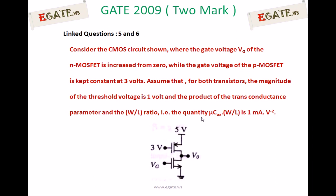For the given CMOS circuit, it consists of a PMOS transistor on top and an NMOS transistor below. The NMOS transistor is given some input voltage VG (gate voltage of NMOS), whereas the gate voltage of PMOS is kept constant at 3V. The magnitude of threshold voltage VTP equals VTN equals 1V, and the transconductance parameter beta (mu_Cox into W/L) is 1 mA per volt squared for both transistors.